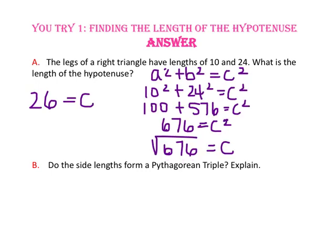Part B wants to know if the side lengths form a Pythagorean triple. Since 10, 24, and 26 are all non-zero whole numbers that fit the equation a squared plus b squared equals c squared, they are a Pythagorean triple.